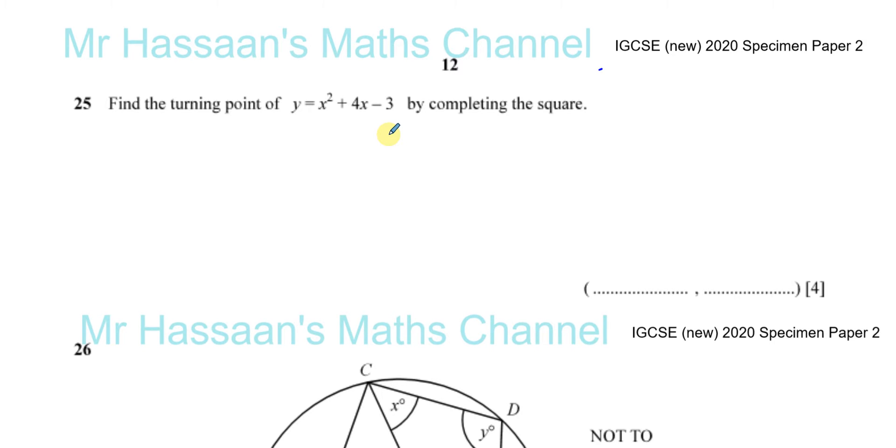However, here they have specifically told us to find the turning point by completing the square. So you should be familiar and comfortable with doing this in whichever way they ask. Now, we need to use completing the square. I'm going to explain at the end why completing the square gives us the form which helps us find the turning point. First, let's just complete the square.